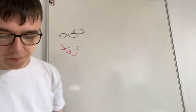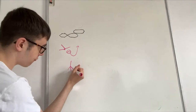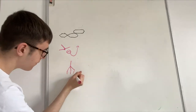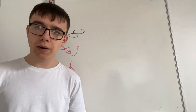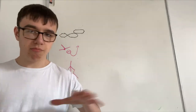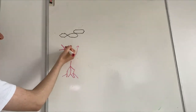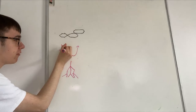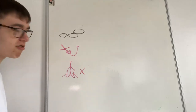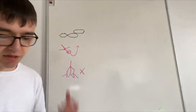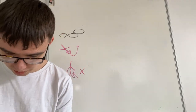Diamond is very different — it's a 3D structure. What you should talk about is that it's extremely hard because all four of carbon's bonds are used. Compare that to graphite's three out of four — diamond uses four out of four, making the bonds very strong. More energy is required to overcome these forces, giving diamond a high melting and boiling point.